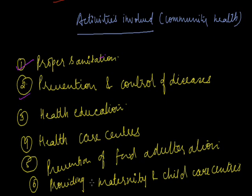For prevention and control of diseases, we can do preventive vaccinations against a number of diseases like TB, measles, hepatitis, etc. We can also spray mosquito and insecticide chemicals at regular intervals. Health education should be provided to people from time to time so that they can be aware of the means of transmission of diseases and their preventive methods.